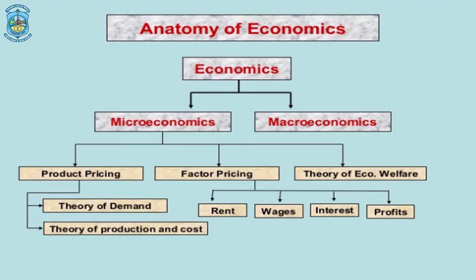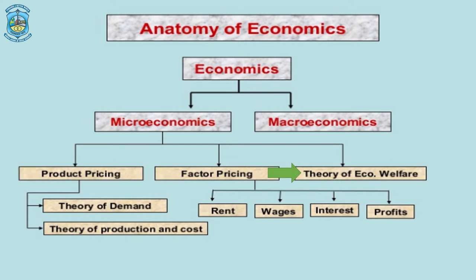Let's quickly recall the anatomy of economics. Economics is broadly divided into two categories: microeconomics and macroeconomics. Microeconomics is further classified as product pricing, factor pricing, and theory of economic welfare, whereby product pricing deals with the theory of demand and the theory of production and cost. Factor pricing deals with land, labor, capital, and entrepreneur, which gets rent, wages, interest, and profits.